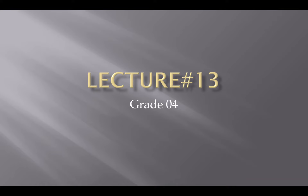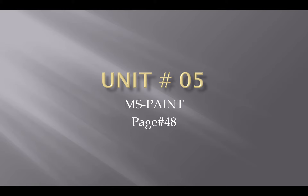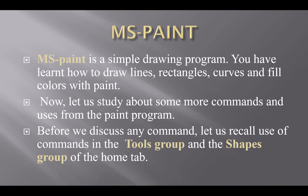Bismillahirrahmanirrahim, Assalamu Alaikum. Hope you all are fine. Today I will teach you computer science of grade 4, chapter number 5: MS Paint. MS Paint is a simple drawing program. You have learned how to draw lines, rectangles, curves, and fill colors with paint. MS Paint mein aap drawing kar sakte hain, shapes draw kar sakte hain, lines draw kar sakte hain, aur unko fill kar sakte hain colors se.